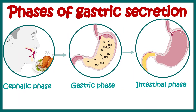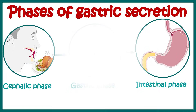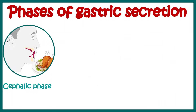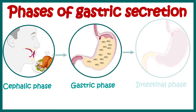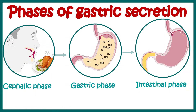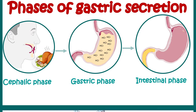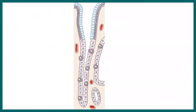In this video we'll talk about the phases of gastric secretion. Gastric secretion has three phases: cephalic phase, gastric phase, and the intestinal phase. We'll look at the events in these three phases and the regulatory mechanisms that operate in these phases.